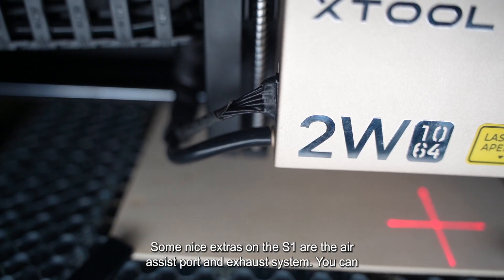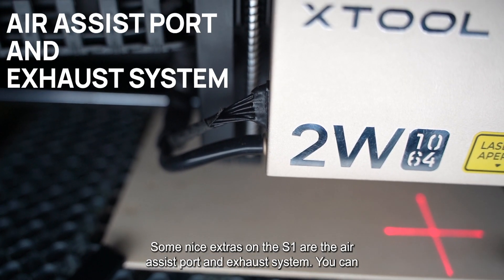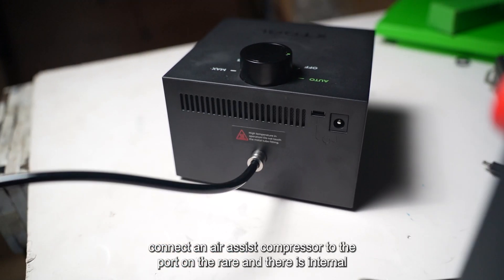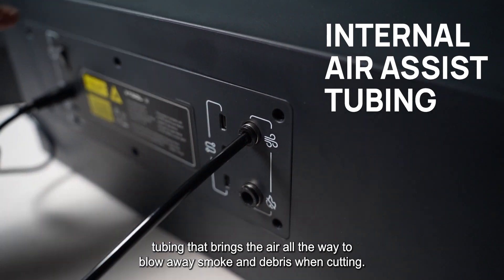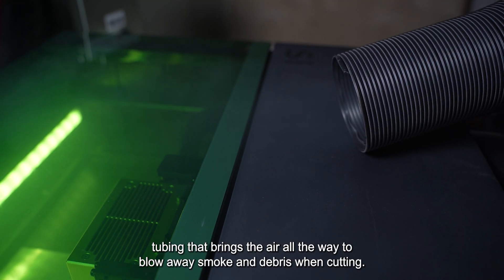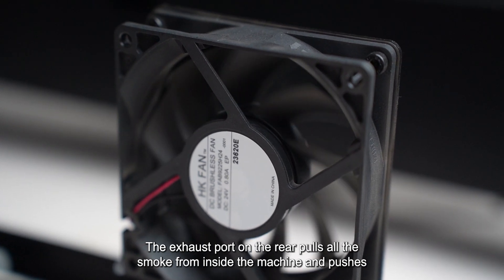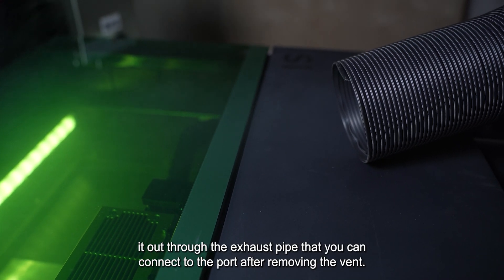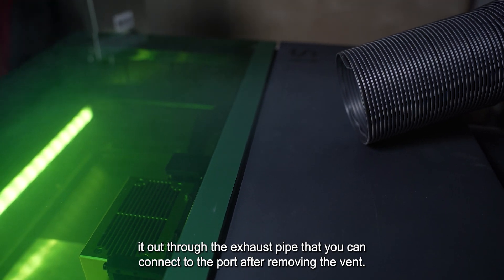Some nice extras on the S1 are the air assist port and exhaust system. You can connect an air assist compressor to the port on the rear and there is internal tubing that brings the air all the way to the nozzle to blow away smoke and debris when cutting. The exhaust port on the rear pulls all the smoke from inside the machine and pushes it out through the exhaust pipe that you can connect to the port after removing the vent.